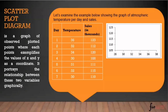Let's have an example of a scatter plot diagram examining atmospheric temperature per day and sales. We try to graph the data from day 1 to day 7. We have temperature per day for day 1 through day 7, and for each day we have corresponding sales in thousands.